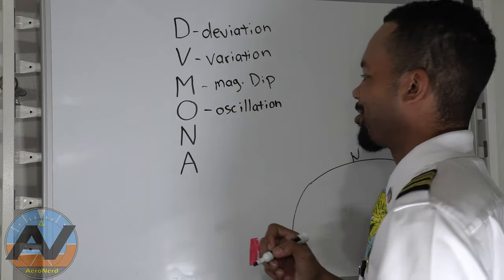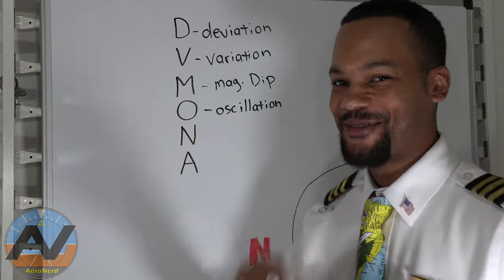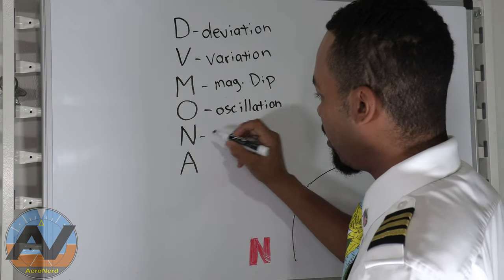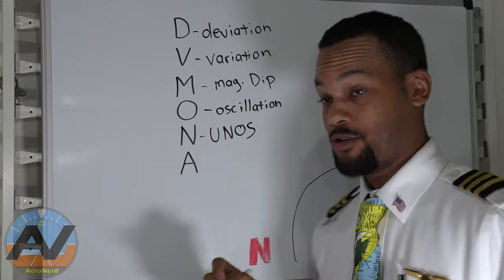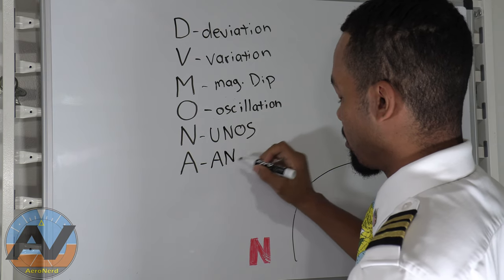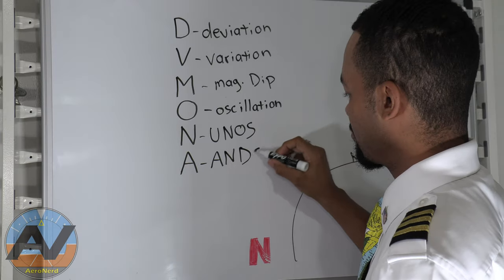Now you're flying through the air, you have turbulence, you have vibration, the kerosene is moving around. You have that oscillation. So that's what oscillation is. N is for UNOS. Undershoot north. Overshoot south. And then ANDS. Accelerate north. Decelerate south.